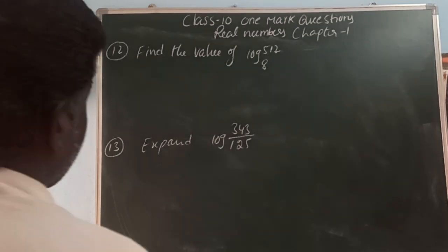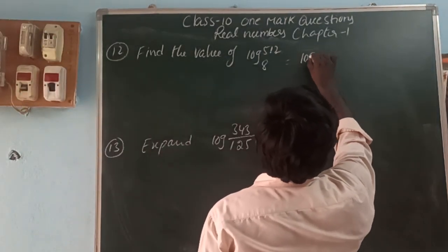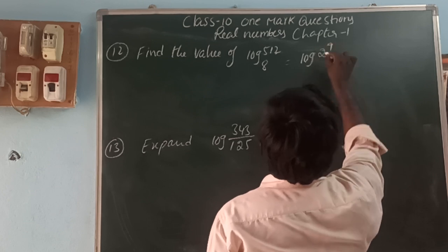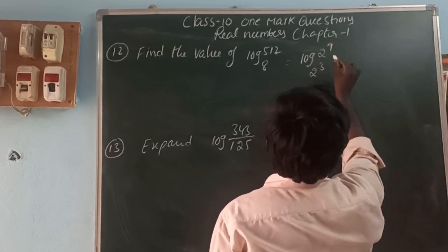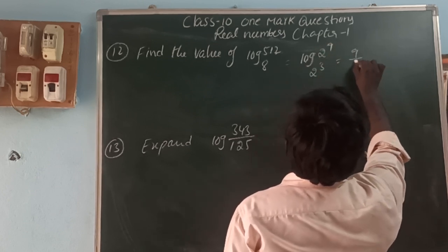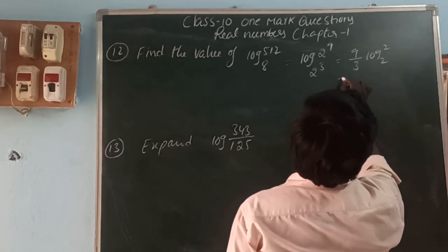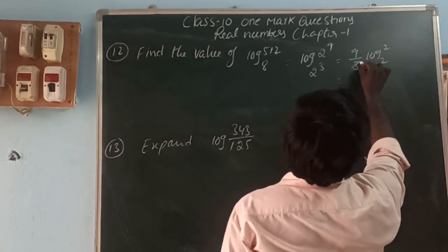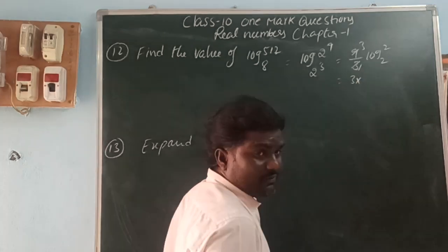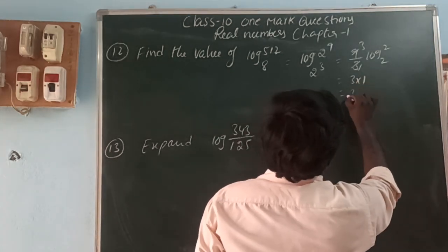Log(5⁴) base (a^Q) — we write 5⁴ as 2^(something) and base a as 2^Q, giving 9/3 · log 2 base 2. That is 3 into log 2 base 2, and log 2 base 2 = 1, so 3 into 1 = 3.